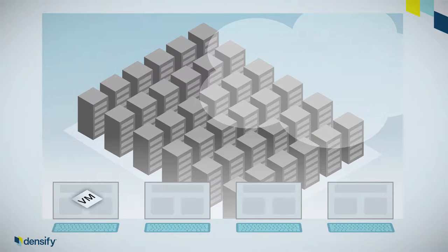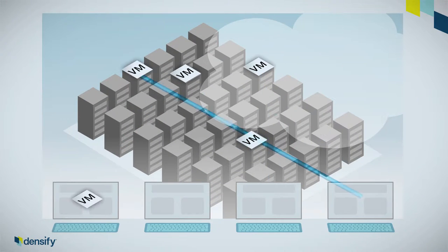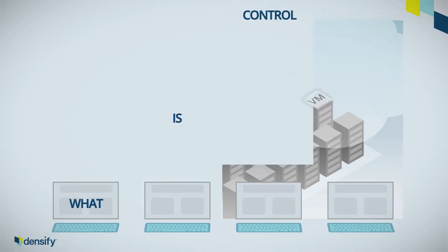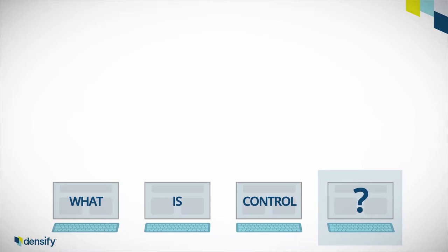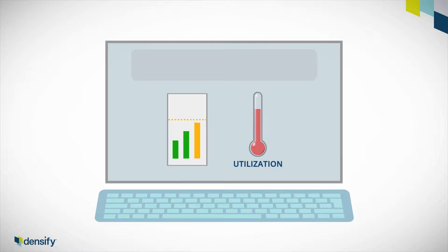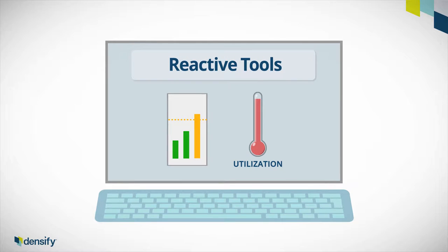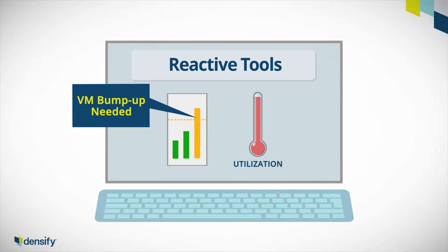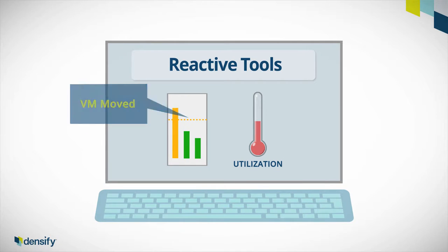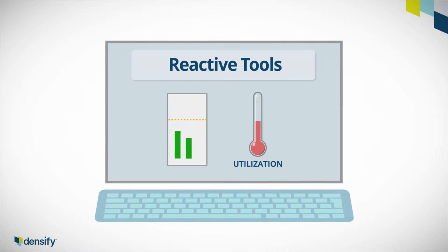Automating optimization in on-premise virtual and bare metal cloud infrastructure requires control. But it's critical to understand the kind of control you really need. Some software vendors claim to give you the control you need to optimize infrastructure, because their tools react quickly to issues that arise in the environments. But the usefulness of reactive control is very limited.